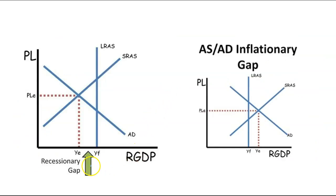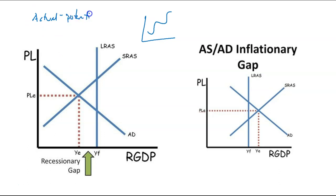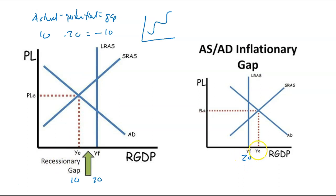The two different kinds of gaps we have are recessionary and inflationary, and these come from the business cycle mentality. We compare full employment to actual: actual minus potential equals the gap. If my actual is at 10 and my full employment is at 20, I have a negative GDP gap of negative 10 — a recessionary gap. But if my actual AS equal to AD is at 25 and my potential is 20, then 25 minus 20 equals a positive 5 — an inflationary gap, expansionary gap, or positive GDP gap.